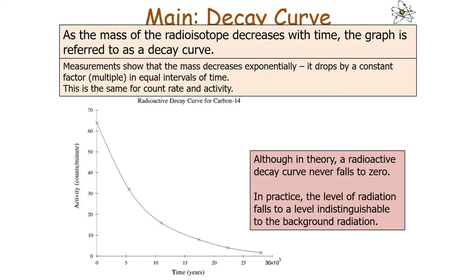As the mass, activity, or count rate decreases with time, the graph is called a decay curve. Measurements show the mass decreases exponentially, dropping by a constant factor in equal intervals of time — the same applies to count rate and activity — because each nucleus has the same chance of decaying. Although in theory the decay curve never falls to zero, in practice the radiation level falls to a level indistinguishable from background radiation.